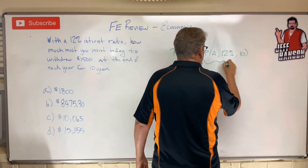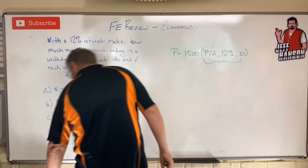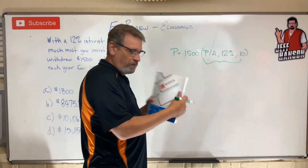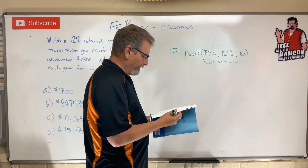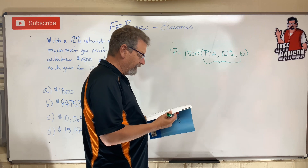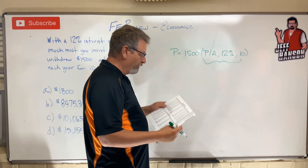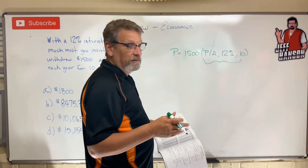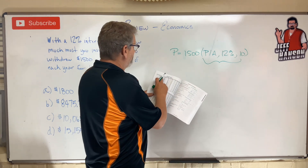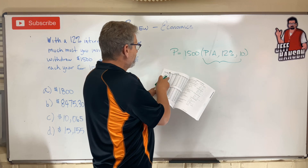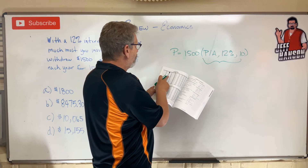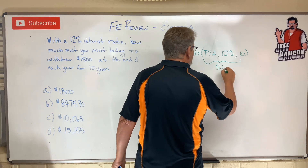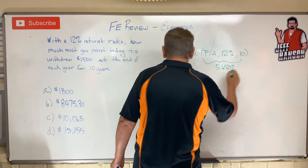Okay, this is our factor — that's a look-them-up. We're going to get our handy dandy FE Review Manual out. We're going to flip to the factor tables and look for the 12% table. There is a 12% table. If there wasn't, I would use the formula, but there is one. I'm in the P given A column, I go down to year 10 — it says 5.6502.